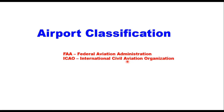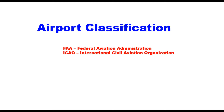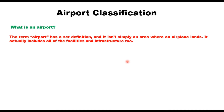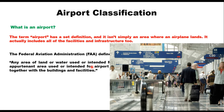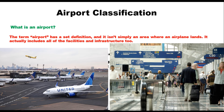Before that, let us understand what is an airport as defined by FAA. This term has a set definition and it is not simply an area where an airplane lands — it actually includes all of the facilities and infrastructure too. As per FAA, an airport is any area of land or water used or intended for landing or takeoff of aircraft, including the appurtenant area used for airport buildings and facilities, as well as rights of way, together with buildings and facilities.